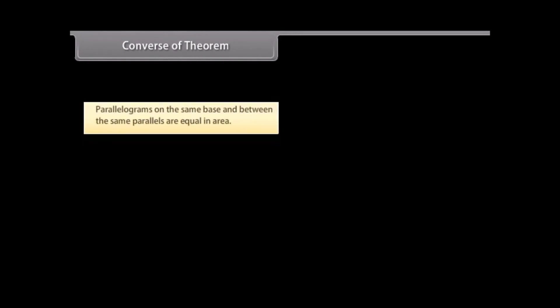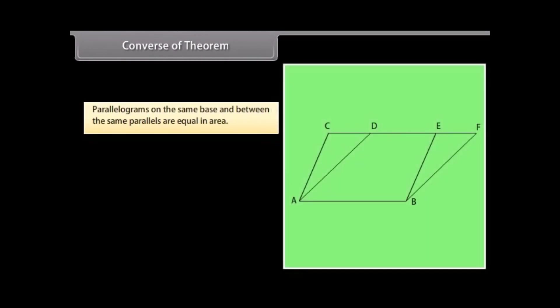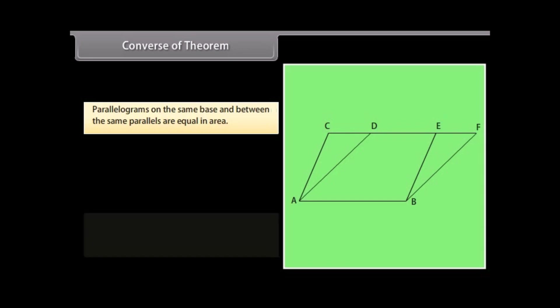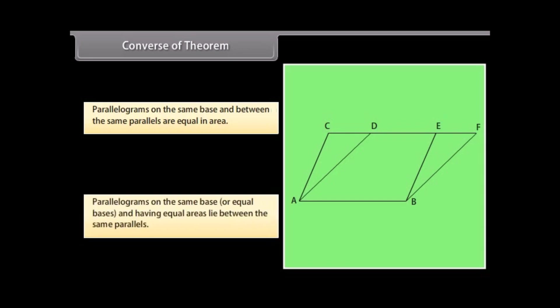So we have proved that the parallelograms on the same base and between the same parallels are equal in area. The converse of this theorem is also true, which says that parallelograms on the same base or equal bases and having equal areas lie between the same parallels.